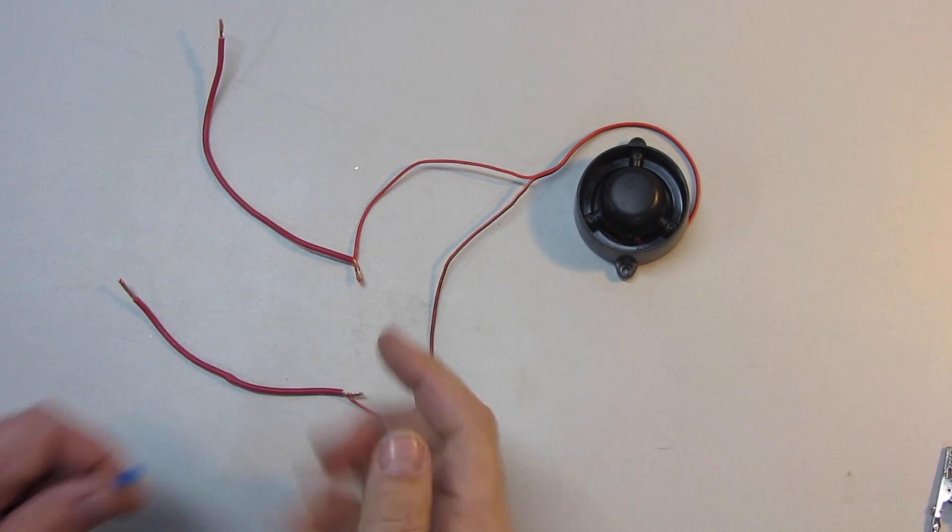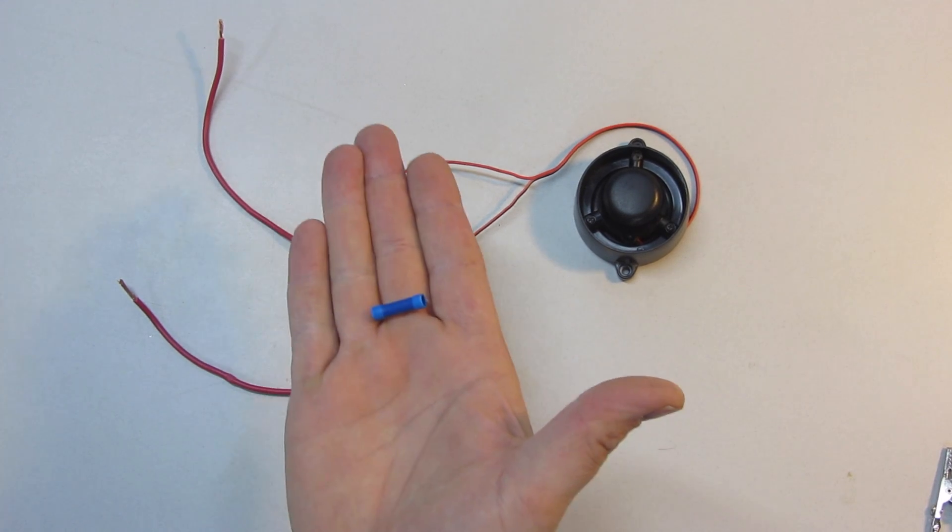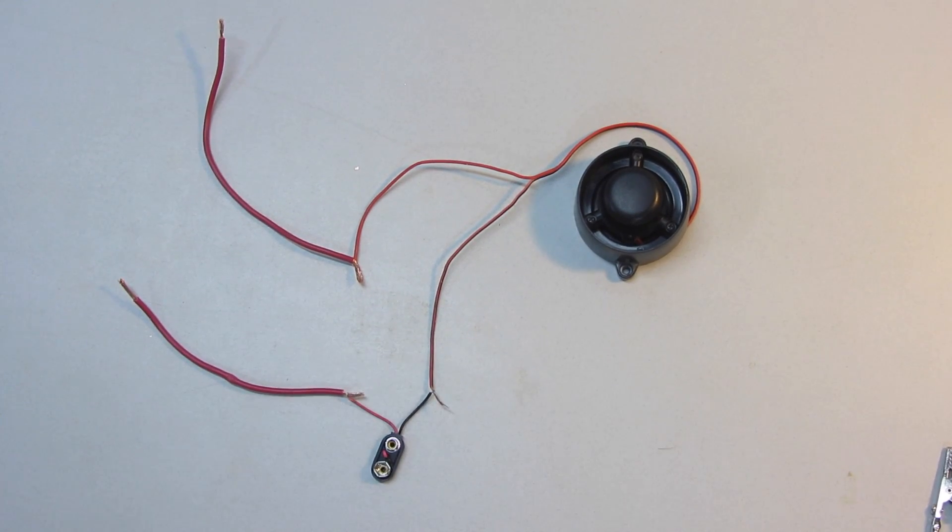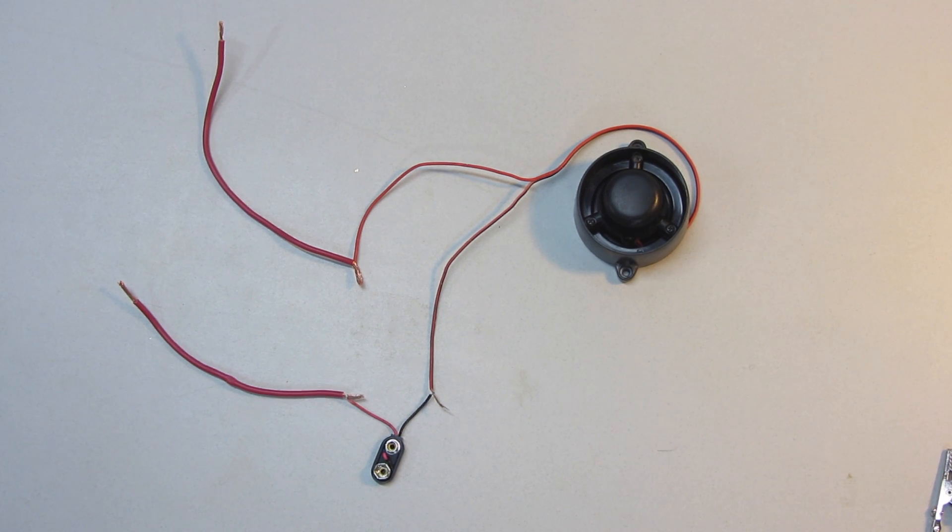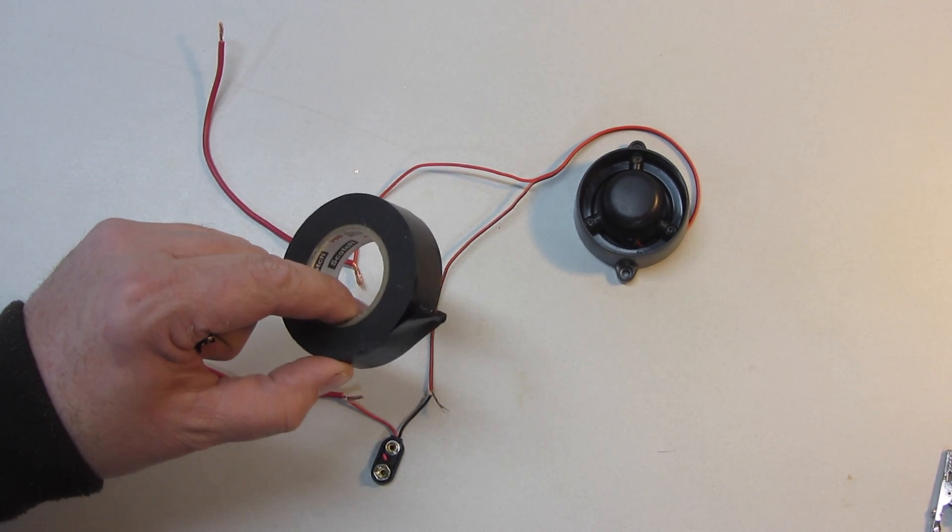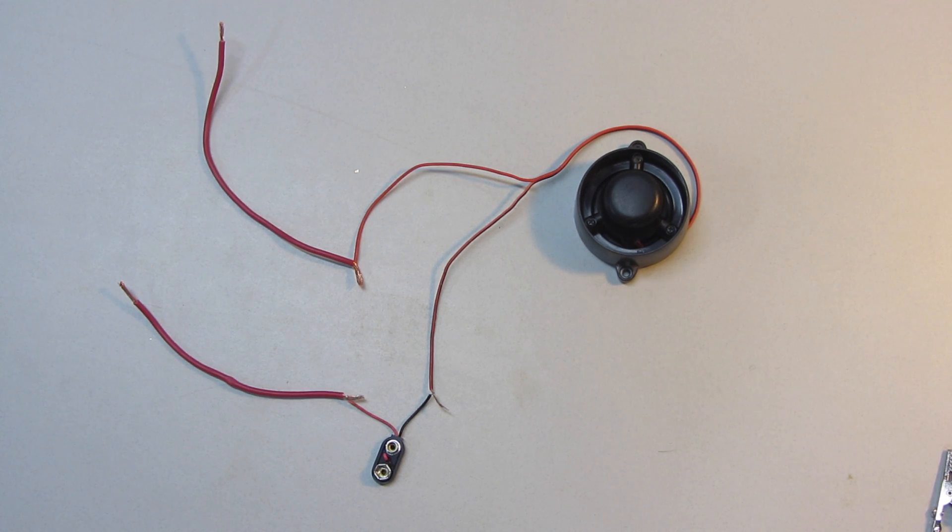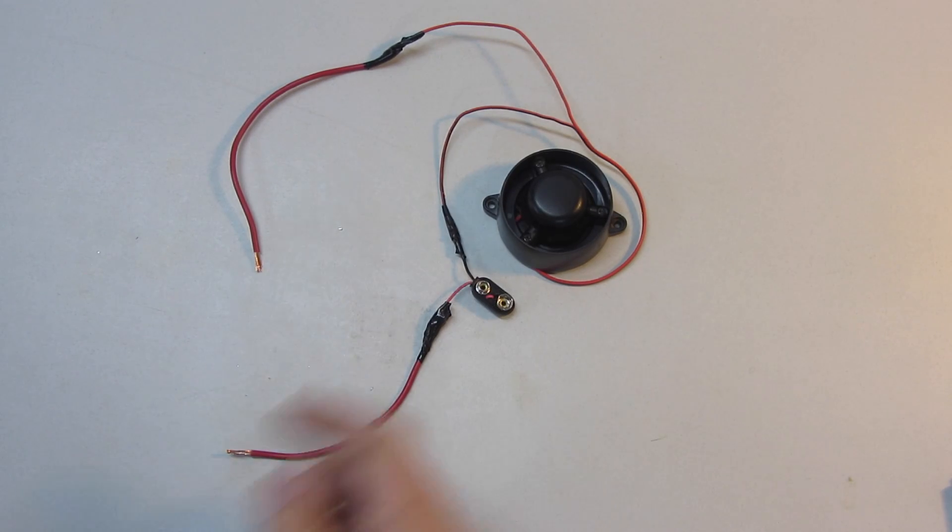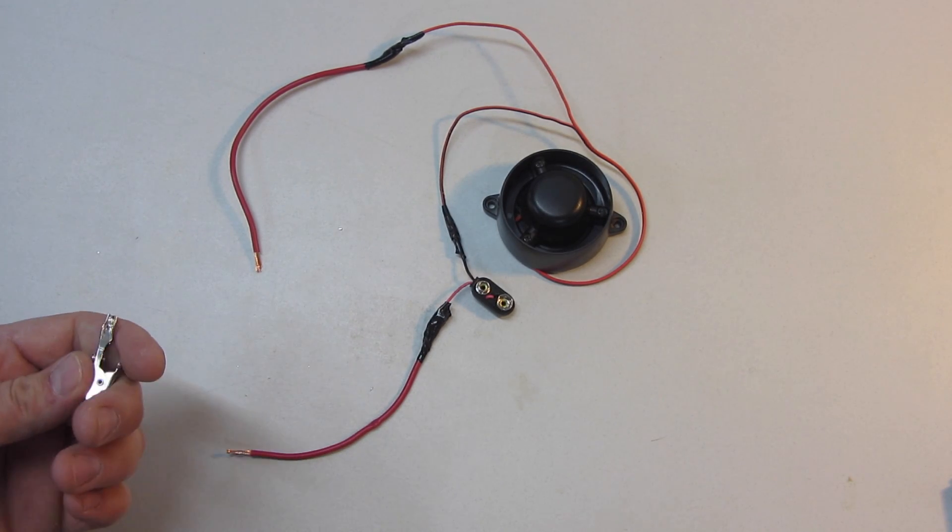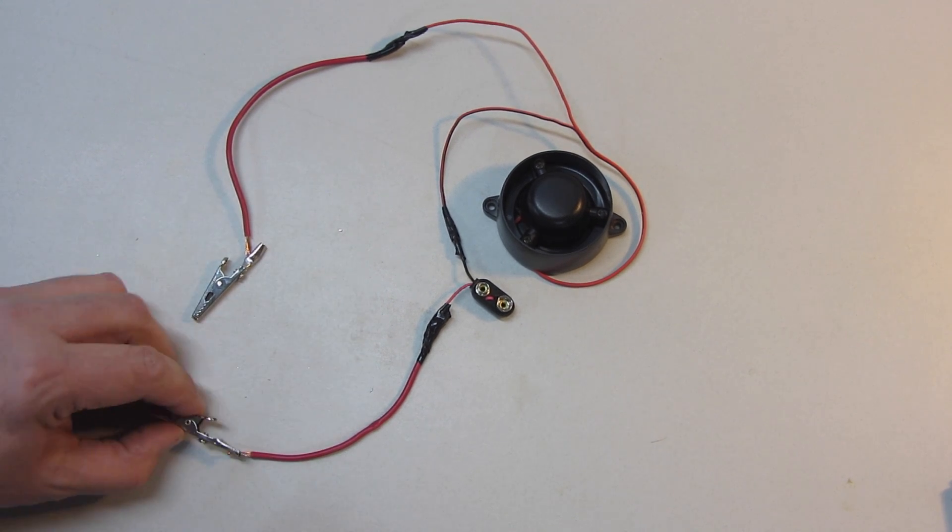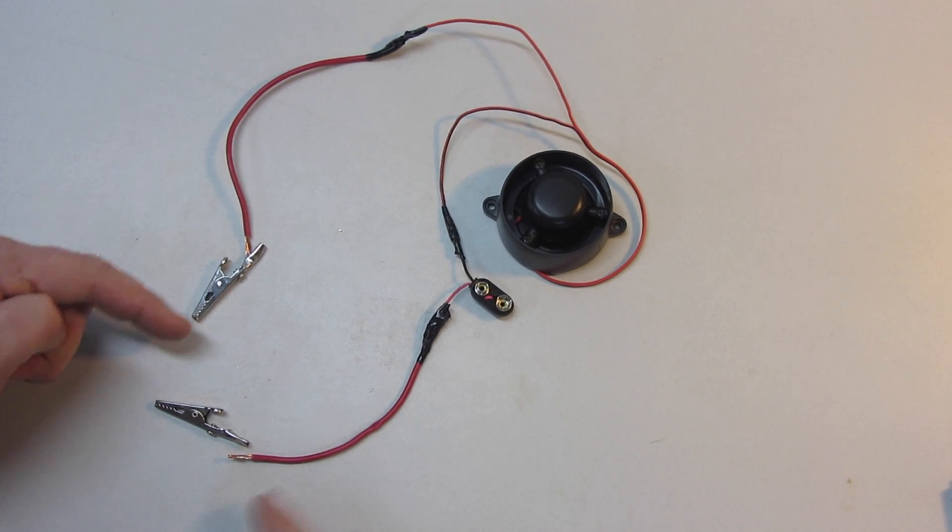Now, I could have used butt connectors to crimp the ends together instead of twisting them, but I'm trying to make this as simple as I can, so I'm just going to tape the connections with electrical tape. Now that I'm taped up, the last thing I've got to put on are my alligator clips, and I will crimp those on the end of these wires.